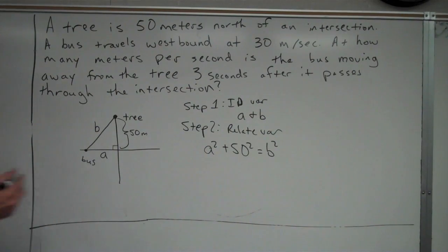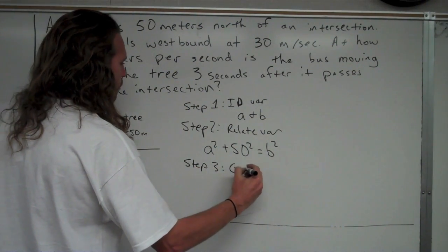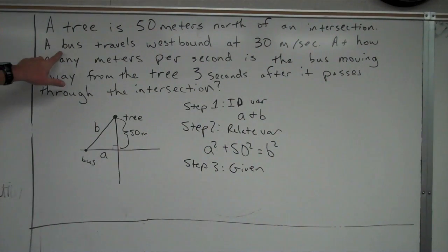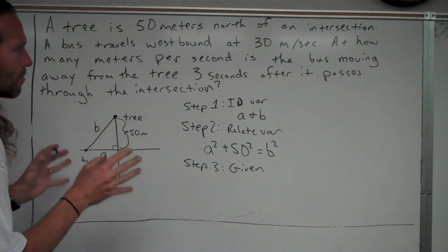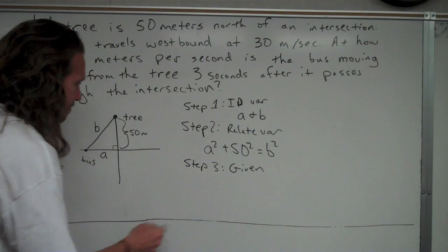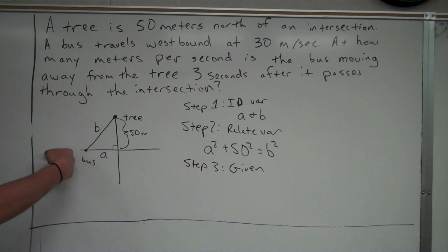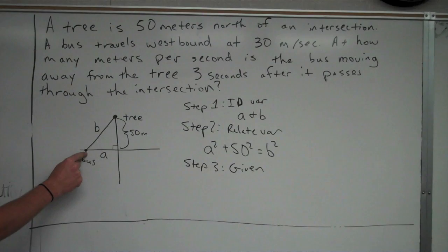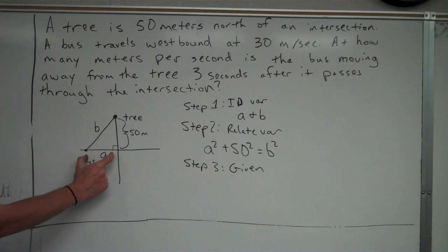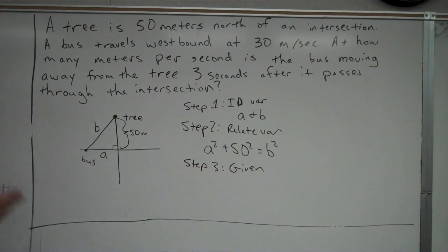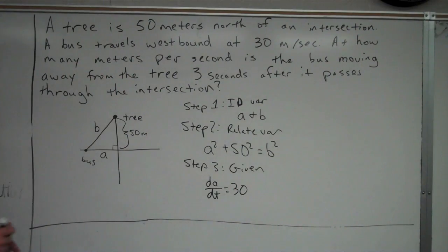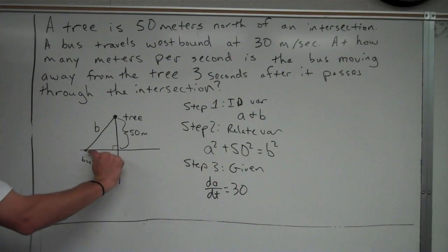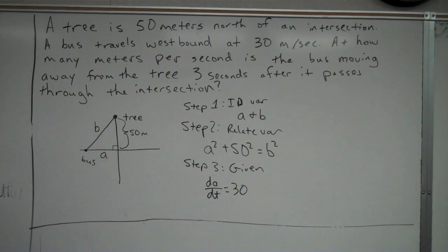Step three: figure out what is given. The bus travels westbound at 30 meters per second. As the bus moves left at 30 meters per second, the side length A increases at a rate of 30 meters per second. So dA/dt equals 30. That represents how fast A is changing — at a rate of 30 meters per second.